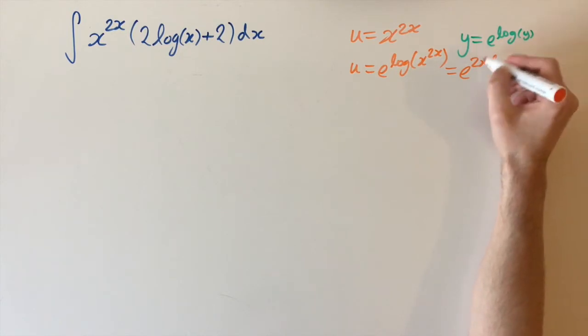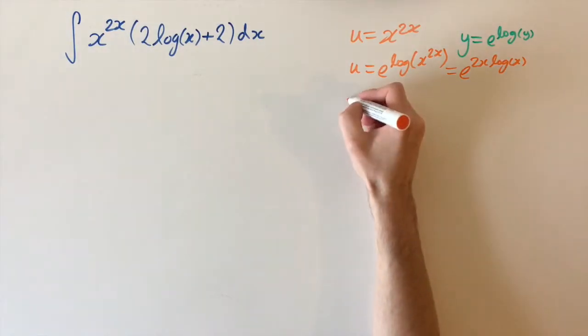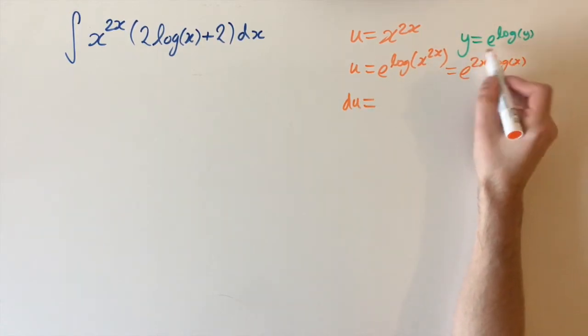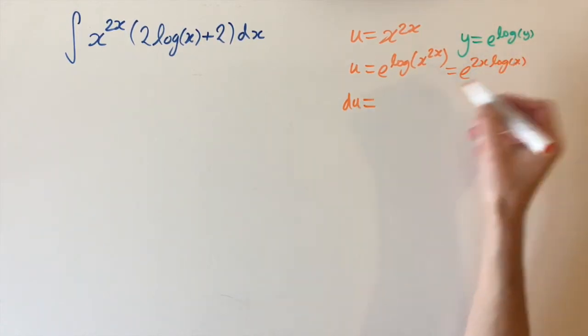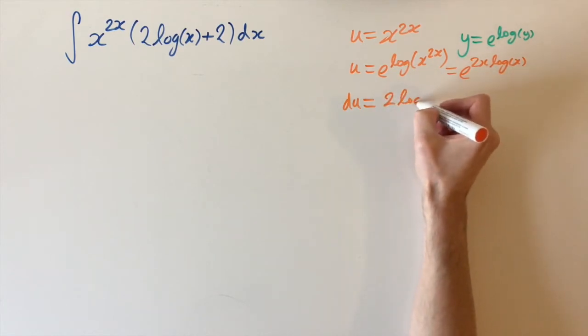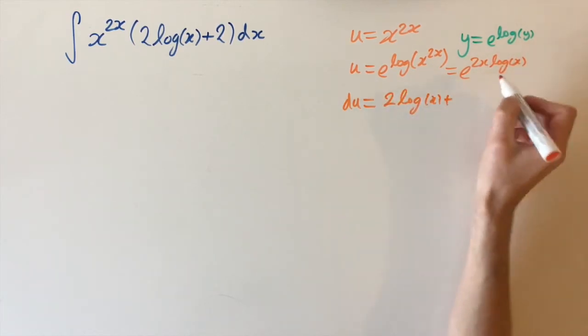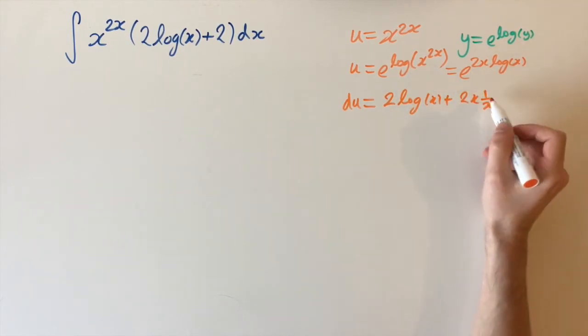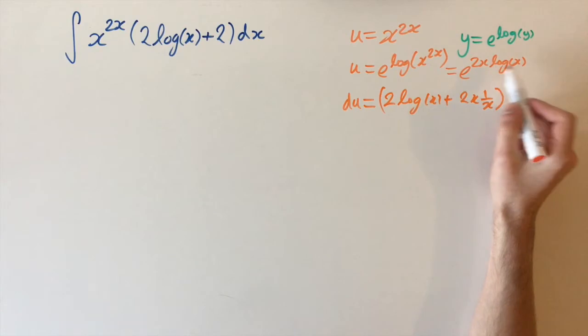This is really nice because now we can differentiate it. We have du equals—using the chain rule, differentiate the exponent first: 2 times log of x plus 2x times 1 over x, using the product rule. Then, using the chain rule again,